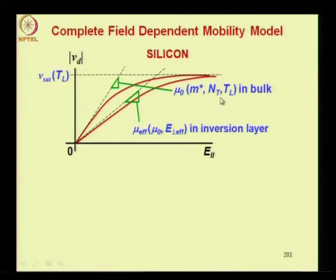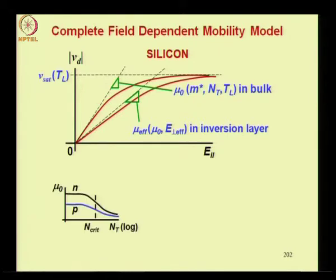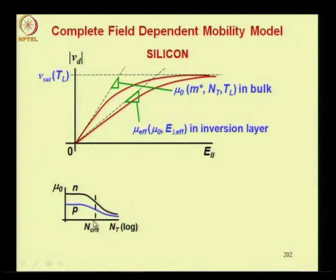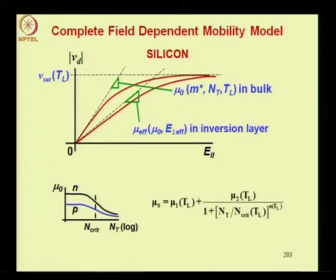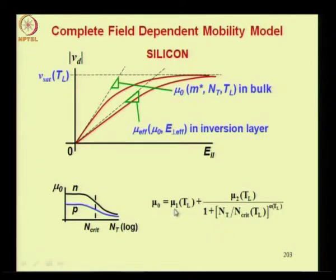The bulk mobility depends on the effective mass of carriers, total doping concentration (sum of donor, acceptor, and defect concentrations), and lattice temperature. The bulk mobility as a function of doping at a given temperature shows a high value for low doping concentration, ultimately saturating to a low value at very high doping. N_critical is the doping concentration at which the mobility is half the initial value. Using N_critical, mobility can be written as an expression where mu1, mu2, N_critical, and alpha are all functions of lattice temperature. For large N_T it approaches mu1, and for N_T equal to zero it has the value mu1 plus mu2.